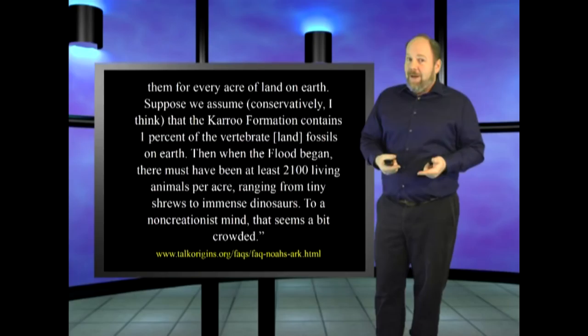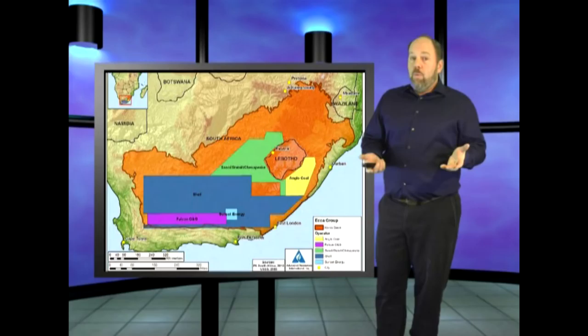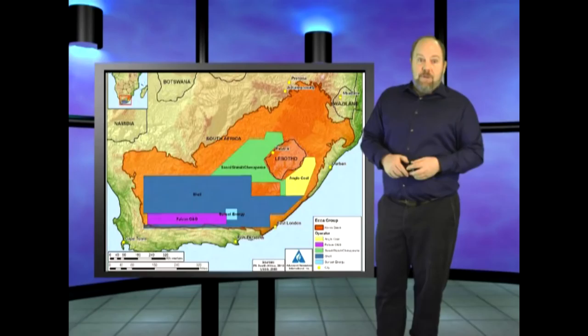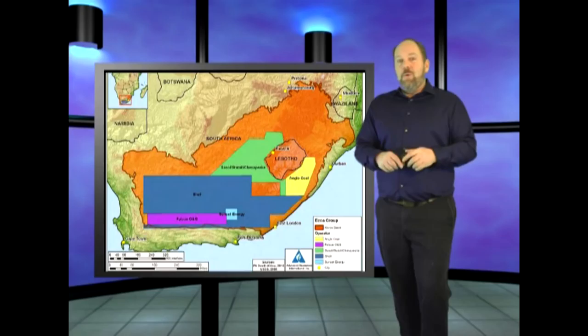First of all, his uniformitarian mindset subtly rears its ugly head. He assumes that the layers of the Karoo formation represent time periods, and not a large formation that was a flood wash. A flood wash would have accumulated animals from a much larger area, channeling them into smaller areas, just like we see in floods today. So while the 800 billion animals of the Karoo formation probably represents a washed-in collection of animals from a much larger area, let's go with his numbers and assumptions at face value.